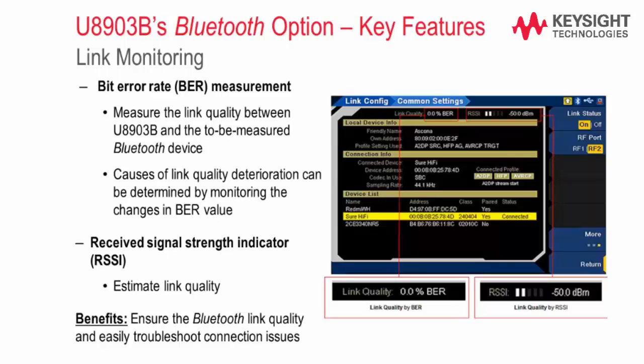Other than this, the received signal strength indicator can be used to estimate the Bluetooth link quality as well. With the link monitoring features, customers can make measurements with the assurance that the Bluetooth link connection is reliable and the test results obtained are creditable. It also eases troubleshooting of connection issues.